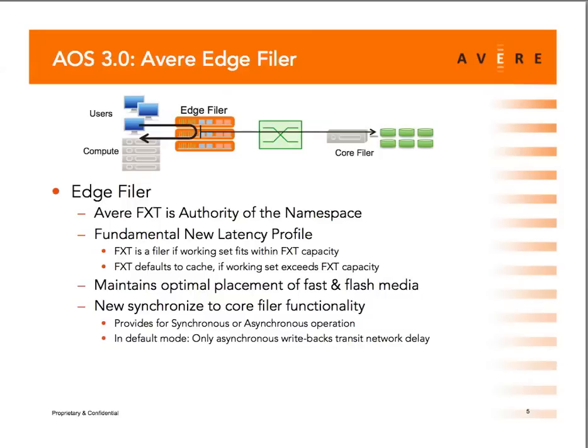One big step is we now allow you to write more data than the edge filer can physically hold. A traditional filer rejects writes once it's full, but our edge filer works differently: up to its capacity it behaves as a full filer, and if you try to write more, it defaults back into caching mode — deciding that the least active data, already stored on the core filer, doesn't need to be held at the edge.